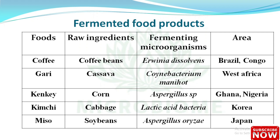Fermented food products: Coffee — raw ingredient: coffee beans, fermenting microorganism: Erwinia dissolvens, area: Brazil, Congo. Gari — raw ingredient: cassava, fermenting microorganism: Corynebacterium manihot, area: West Africa.